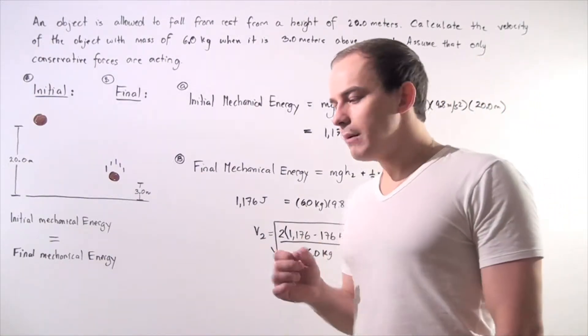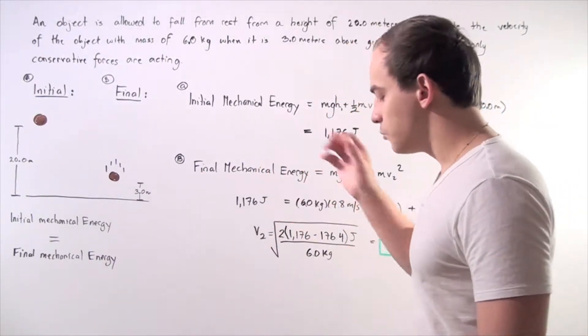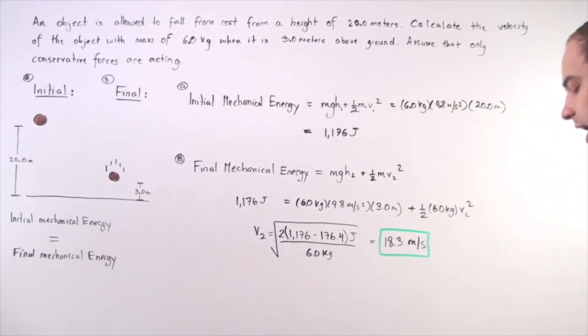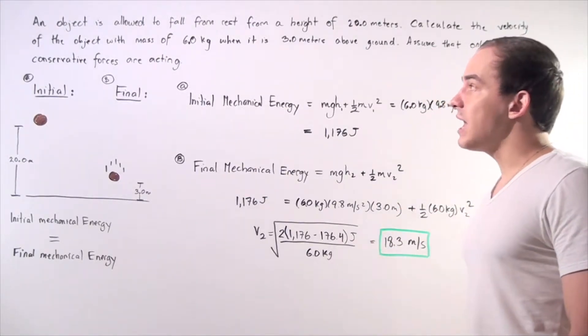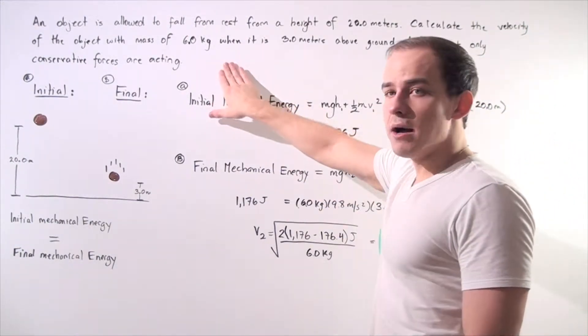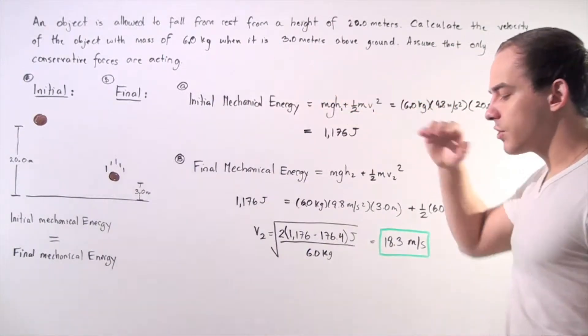Let's suppose that an object is allowed to fall from rest from a height of 20 meters above the ground. Now we want to calculate the velocity of the object with a mass of 6 kilograms when that object is 3 meters above the ground.